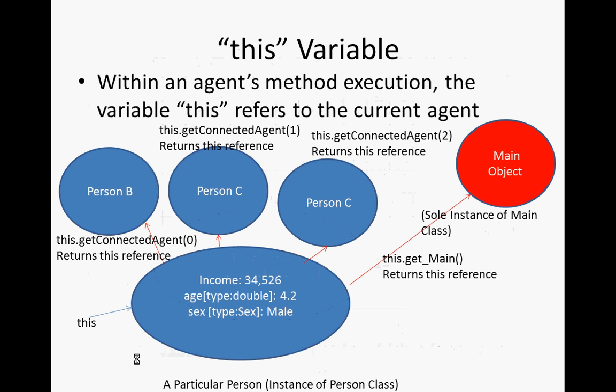I could also get back the reference to person C and ask about his neighbors — I could do this dot get-connected-agent(2) dot get-connections-number to ask how many neighbors he has. But fundamentally, 'this' is all I need to refer to myself. If I want to refer to someone else, I get to them by asking about my neighbors, my name, my size, and so on.